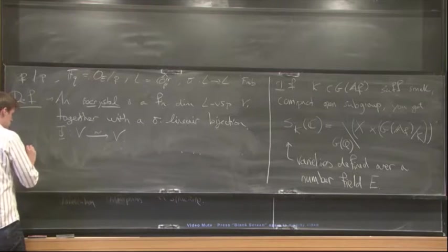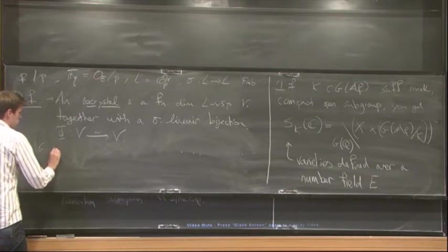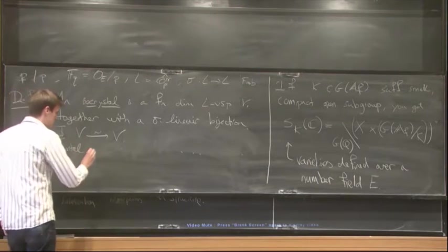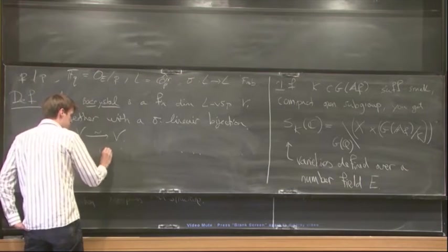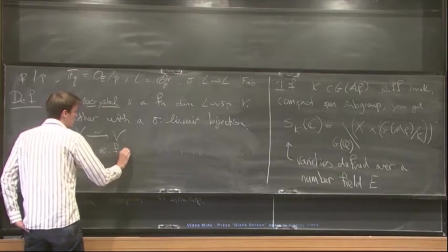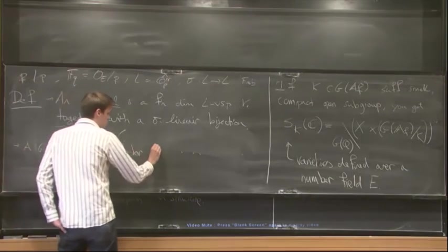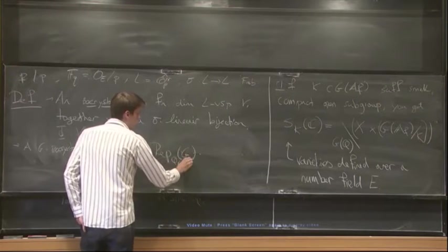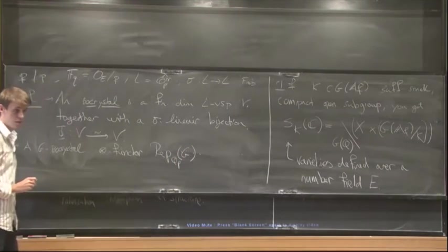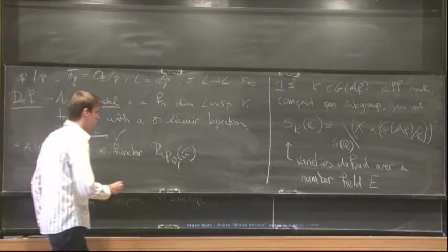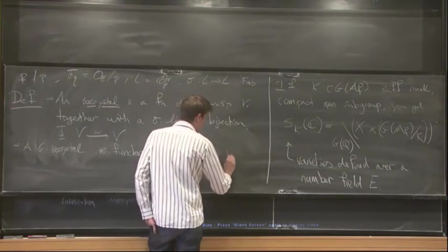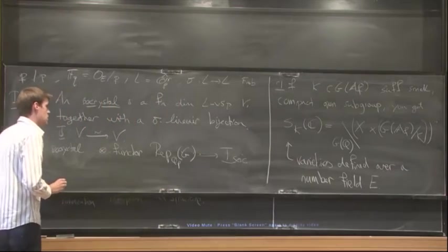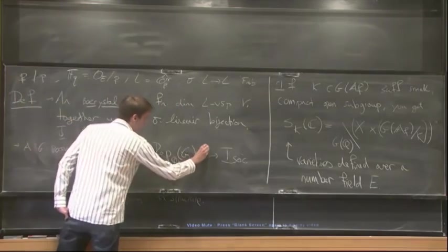So now a G isocrystal. It's an exact faithful tensor functor from the category of finite dimensional representations of G in QP vector spaces to the category of isocrystals. So that's a G isocrystal.